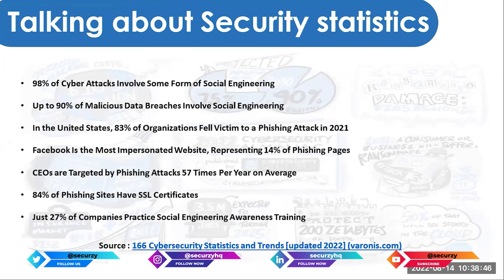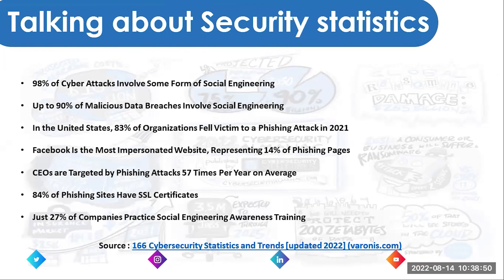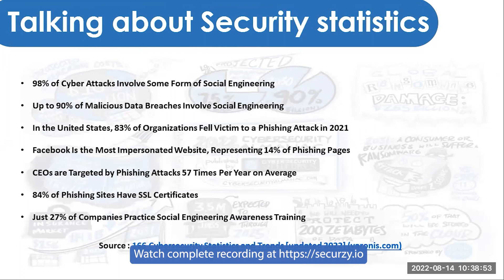Facebook is the most impersonated website, representing about 40% of phishing pages. Beginners wanting to prove themselves tend to target Facebook accounts. They install Kali or Termux on their smartphones, launch a phishing link, and wait for a victim. That's why phishing is so popular — it's naturally easy to launch.